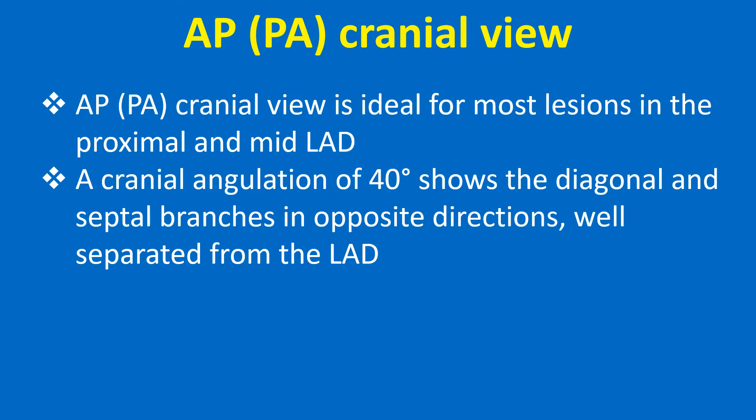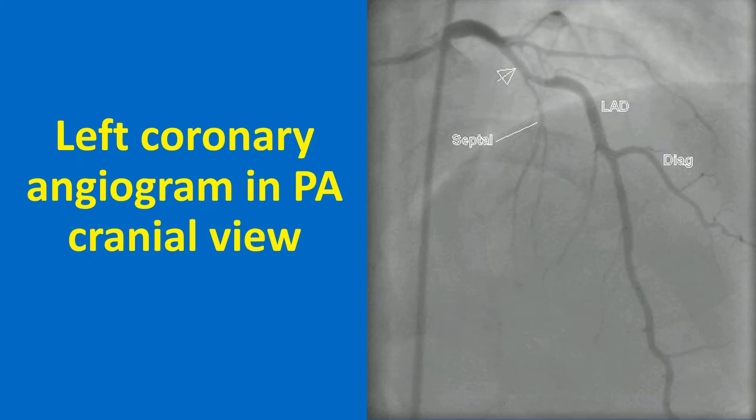PA cranial view is ideal for most lesions in the proximal and mid LAD. A cranial angulation of 40 degrees shows the diagonal and septal branches in opposite directions while separated from the LAD. A left coronary angiogram in PA cranial view shows a proximal plaque marked by an arrow in the LAD — in this case a recanalized vessel after an anterolateral myocardial infarction. Septal and diagonal branches of LAD are also seen, and almost the whole extent of the LAD is visualized. The proximal left circumflex is foreshortened in this view.